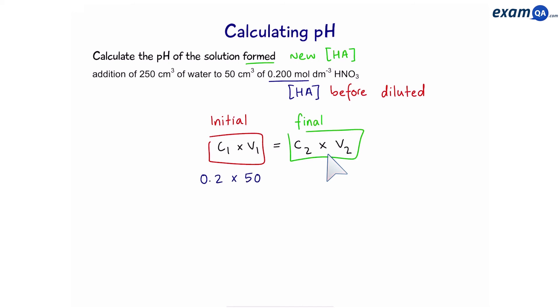So, we know the initial concentration is 0.2 and the initial volume is 50 cm³. The final concentration is unknown, but the final volume is going to be 300, 250 plus 50. So, that's going to give us 0.03 recurring as a final concentration of the acid.